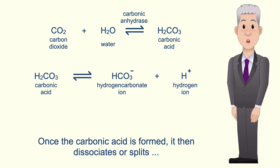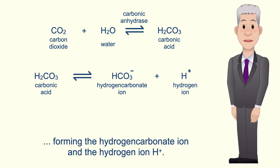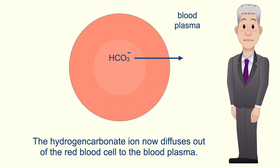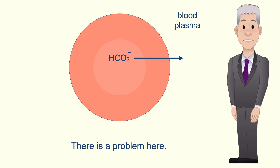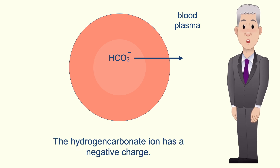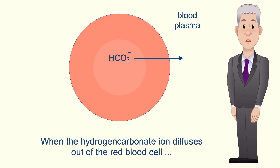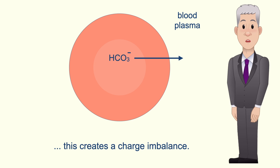Once the carbonic acid is formed it then dissociates or splits, forming the hydrogen carbonate ion and the hydrogen ion H+. The hydrogen carbonate ion diffuses out of the red blood cell to the blood plasma. However there is a problem: the hydrogen carbonate ion has a negative charge, and when it diffuses out of the red blood cell this creates a charge imbalance.